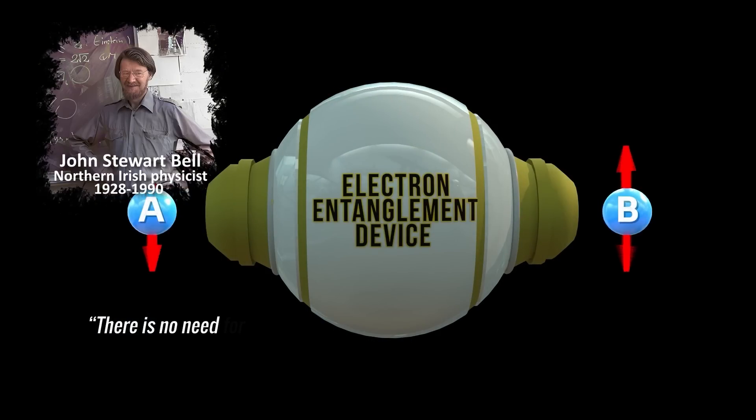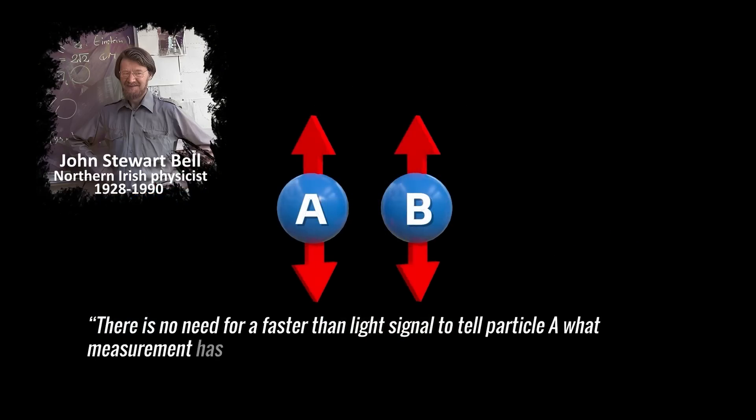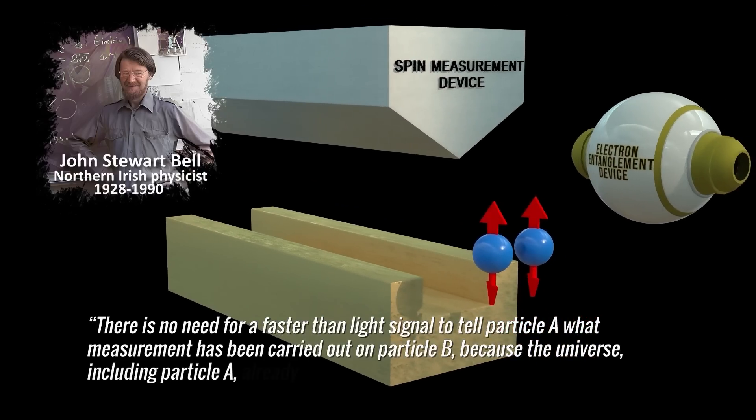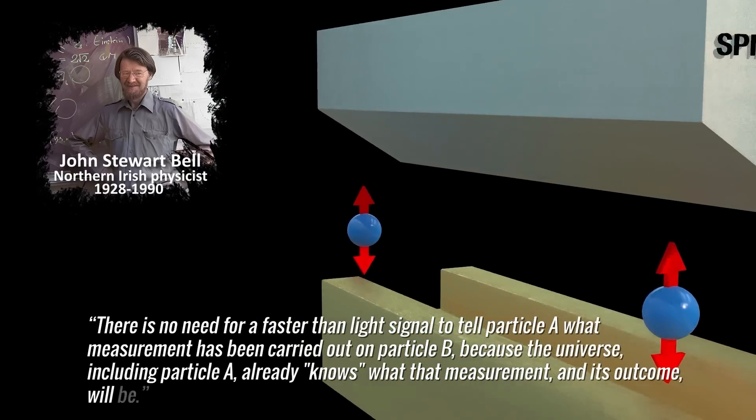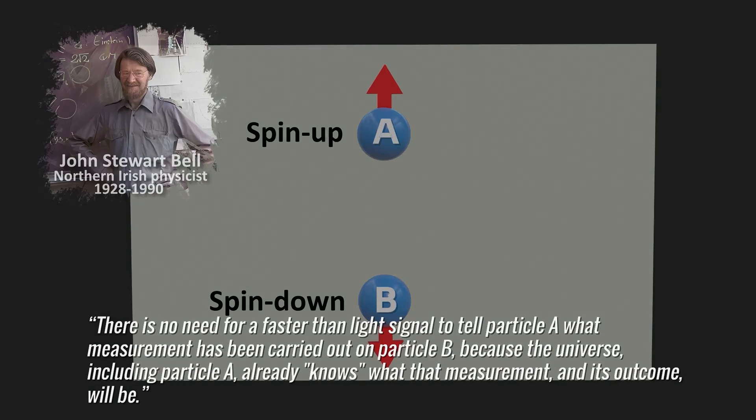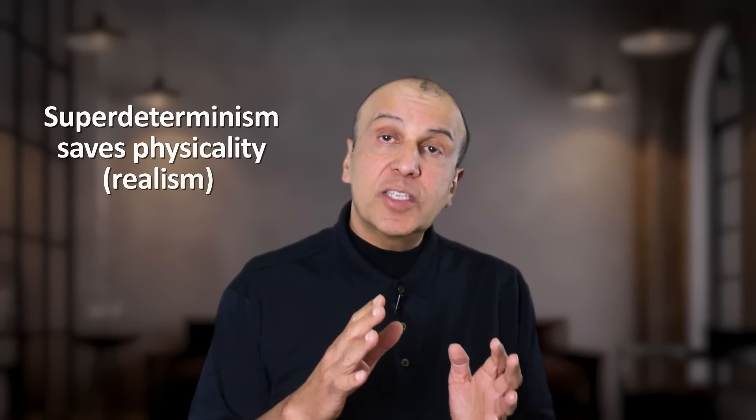There is no need for a faster-than-light signal to tell particle A what measurement has been carried out on particle B, because the universe, including particle A, already knows what that measurement and its outcome will be. You may object to this based on personal incredulity. But it is not really any more unreasonable than many other interpretations of quantum mechanics. And it has some merits which are worth considering. One of them is that super-determinism can save the physicality of particles.